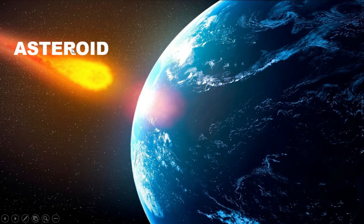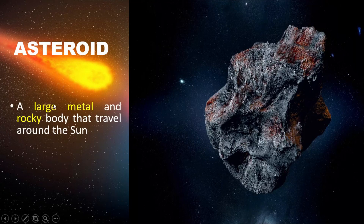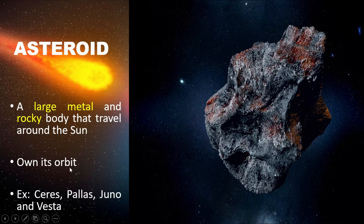What is an asteroid? An asteroid is a large metallic and rocky body that travels around the sun. It also has its own orbit.